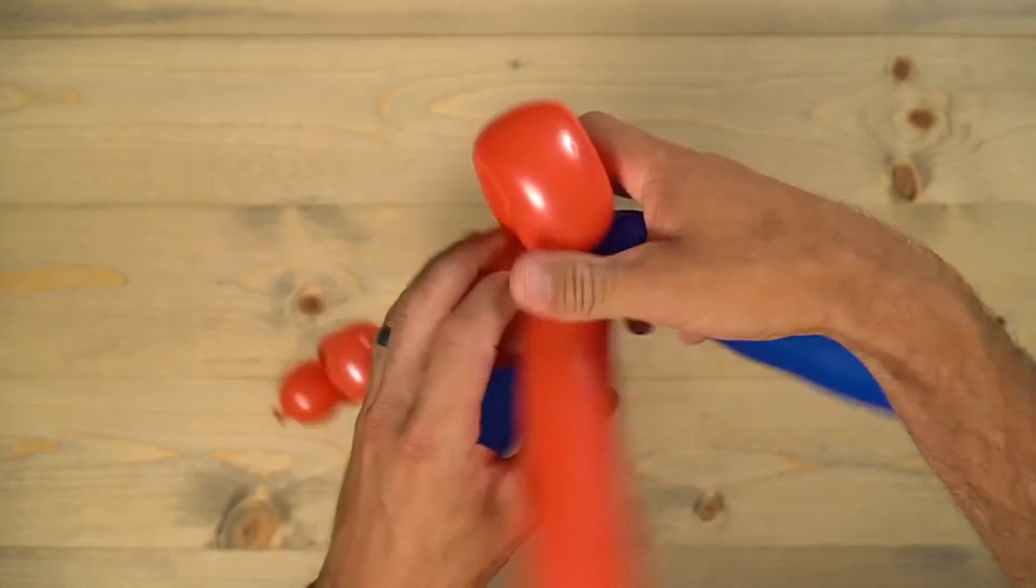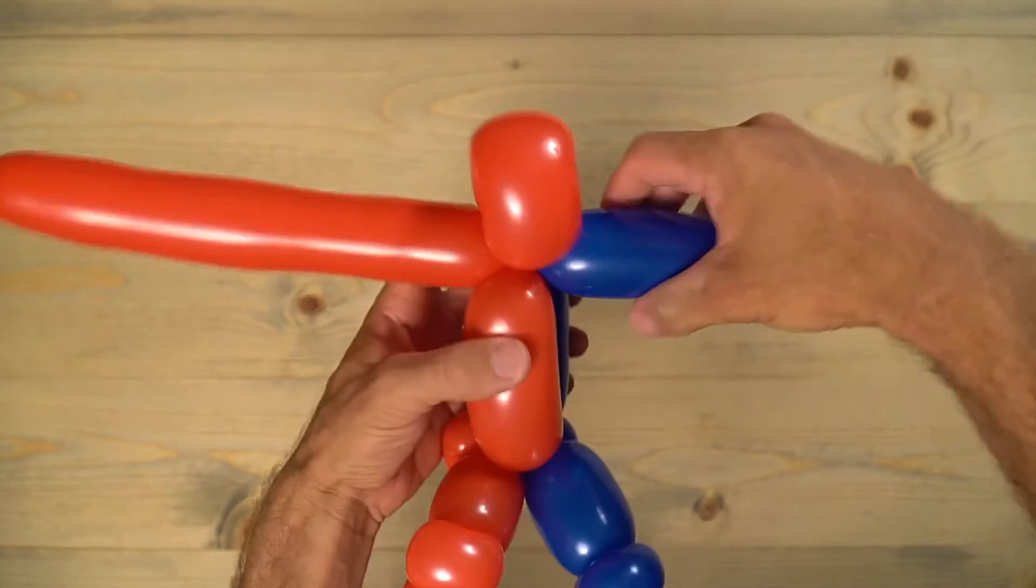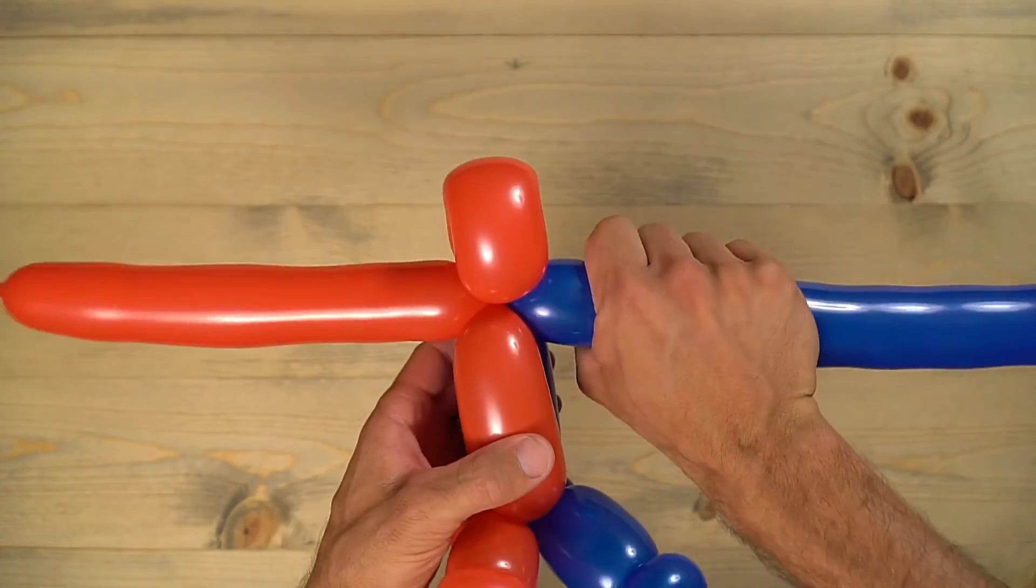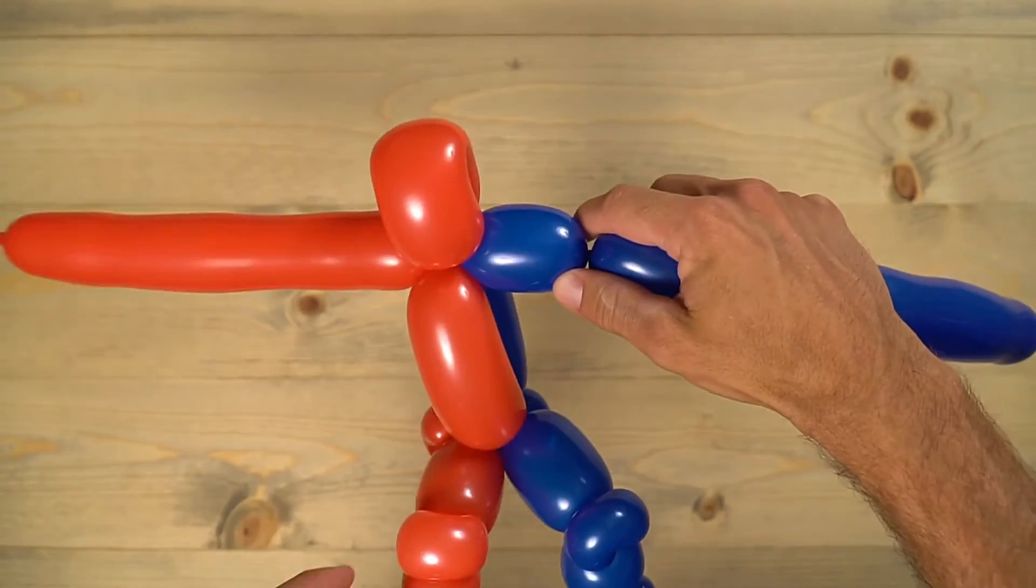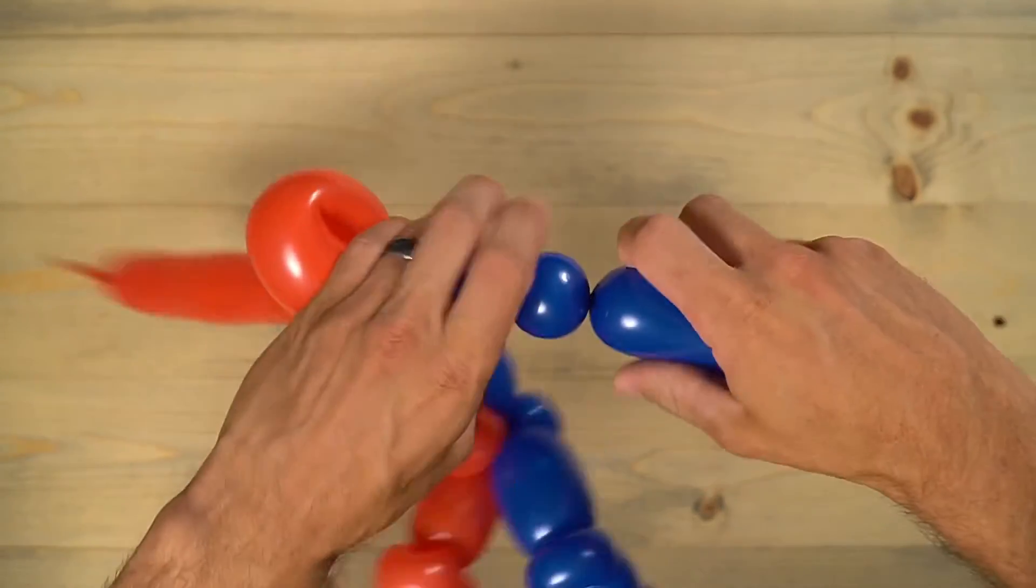Bring the arms straight out until you're ready to finish those off. I like to do it about there. And then another small bubble that I'm going to pinch twist, and this is for the elbow.